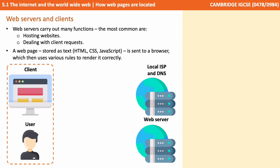Web servers located on the internet carry out many functions. The most common are hosting websites and dealing with clients' requests. A web page stored as a collection of HTML, CSS, JavaScript and other multimedia files is sent to a browser, which then uses various rules to render it correctly.